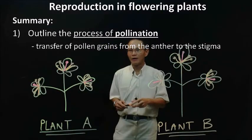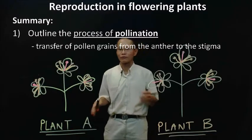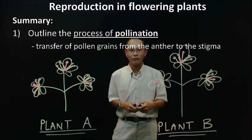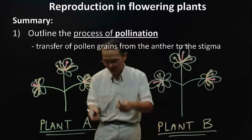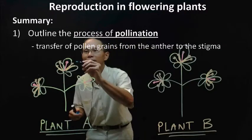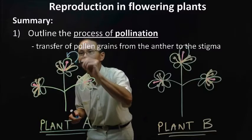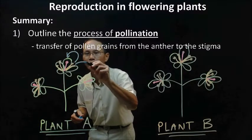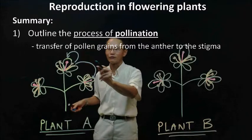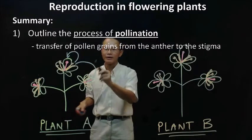Now we learn about pollination. The process of pollination is the transfer of pollen grain from the anther to the stigma, as illustrated here. It can be to the same flower or to a different flower — transferred from the anther to the stigma.